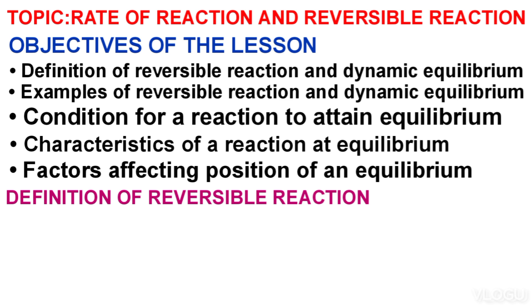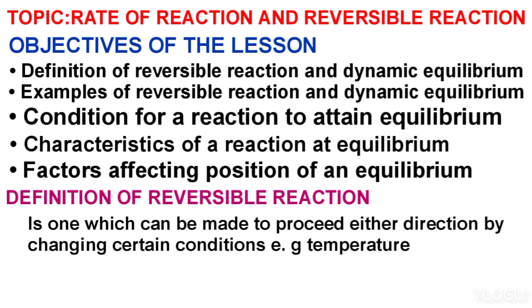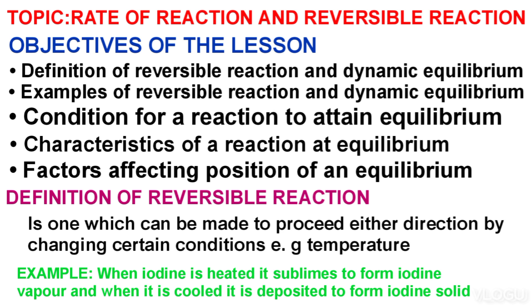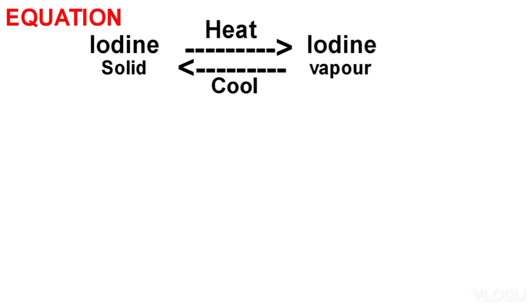Definition: A reversible reaction is one which can be made to proceed in any direction by changing certain conditions, e.g. temperature. Example: when iodine is heated, it sublimes to form iodine vapour. When it is cooled, it is deposited to form iodine solid. The equation is shown below.